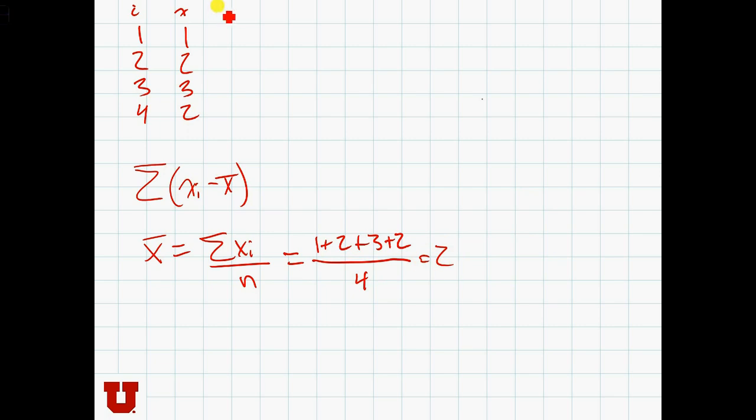So now let's calculate the xi minus x̄ values. 1 minus x̄ is minus 1, 2 minus x̄ is 0, 3 minus x̄ is 1, and 2 minus x̄ is 0. If we were to sum up these values, we would get minus 1 plus 0 plus 1 plus 0 equals 0.